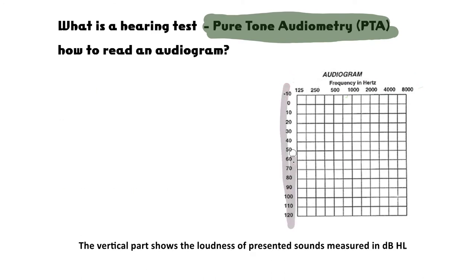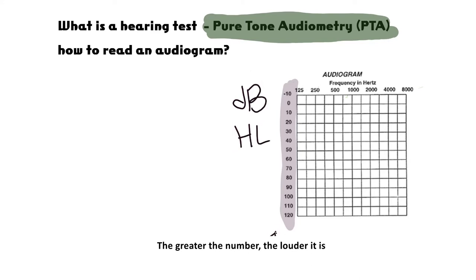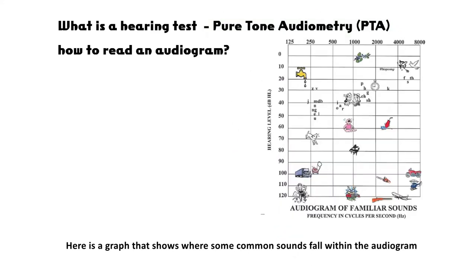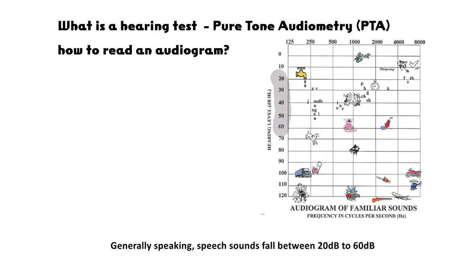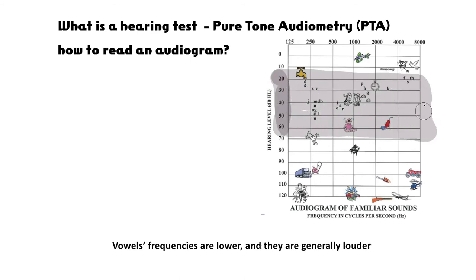The vertical axis shows the loudness of presented sounds measured in dB hearing level. The greater the number, the louder it is. Here is a graph that shows where some common sounds fall within the audiogram. Generally speaking, speech sounds fall between 20 dB to 60 dB.